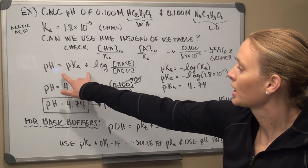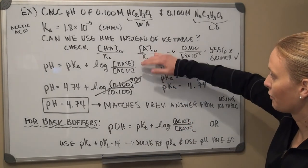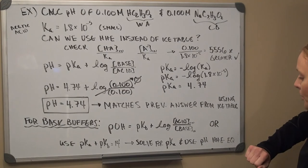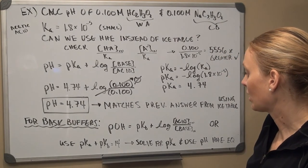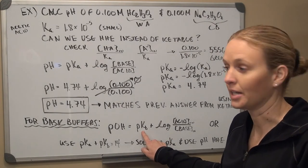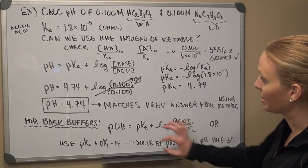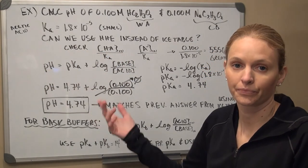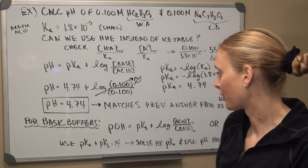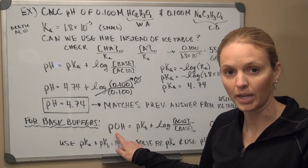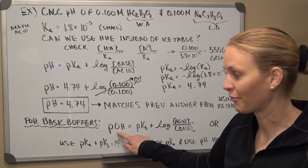For basic buffers, we can rewrite the Henderson-Hasselbalch equation for pOH and pKb, with the ratio flipped to acid over base. Alternatively, if you have a basic buffer and want to use the pH form, convert pKb to pKa using pKa + pKb = 14, then plug the pKa into the standard equation and use pH + pOH = 14 to find pH.